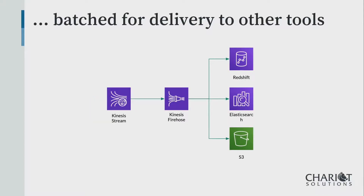Two co-branded products are Kinesis Firehose and Kinesis Analytics. Kinesis Firehose exists to batch up messages — Kinesis is a stream of messages, but a lot of destinations want blocks. Redshift, Amazon's decision support database, really likes million-row updates and does not do individual inserts. You can set up Kinesis Firehose to read messages off the stream, batch them up to however many megabytes or time, and upload them in bulk — similarly with Elasticsearch. Firehose also aggregates messages into files uploaded to S3, giving you an archive or a data lake with files containing, say, 15 minutes worth of messages.